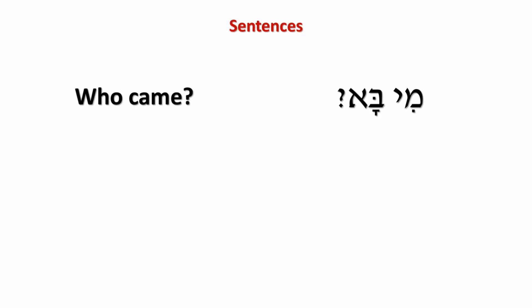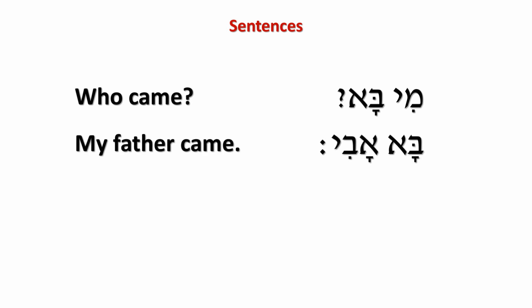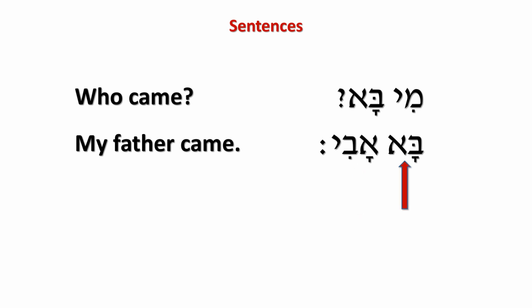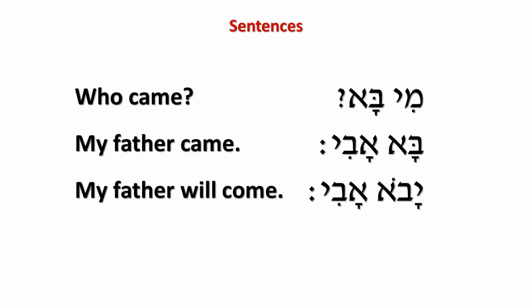Now let's take our vocabulary words and make some sentences. Mi ba? — 'Who came?' Ba avi — 'My father came.' Notice that in English, the subject 'father' comes before the verb 'came,' but in Hebrew, avi — meaning 'my father,' which is the subject — comes after the verb ba. We will go into this in more detail when we learn how Hebrew sentences are constructed, but for now just recognize that the subject comes after the verb, unlike in English. Yavo avi — 'My father will come.'